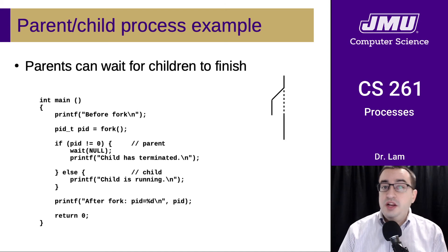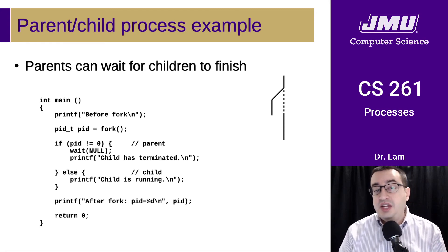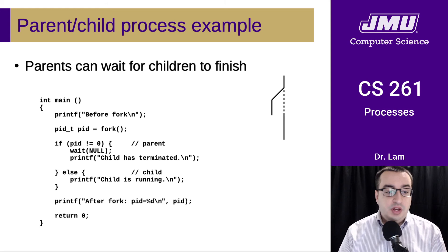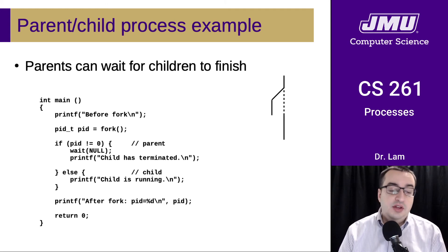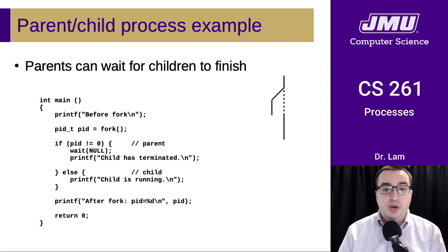Parents can also wait for children to finish because, as you remember, the fork function returns the process ID of the child in the parent process. Here is an example of a parent waiting for the child — here we're just waiting for any child, so we don't actually need the PID. But if a parent had created a bunch of different children, it could choose which one to wait on.